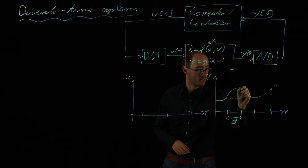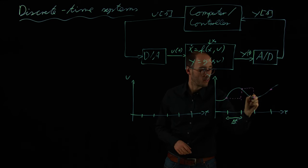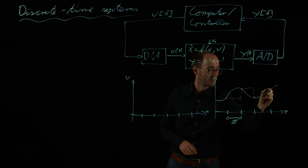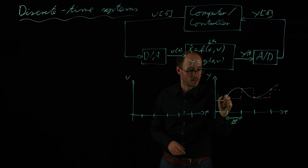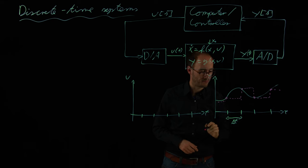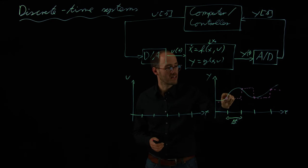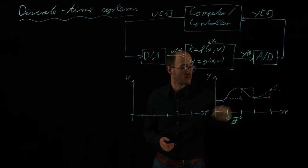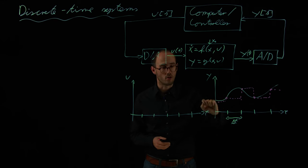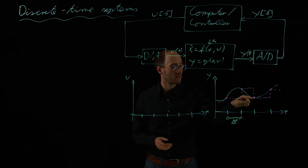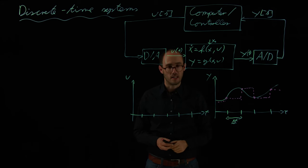we will only see the measurement points at these distinct time steps. So, from the viewpoint of the computer, the actual signal would maybe look something like this. We do not know what is happening in between here. We would not have access to this continuous curve, but we would only have access to the measurements at these discrete measurement points with distance delta T.